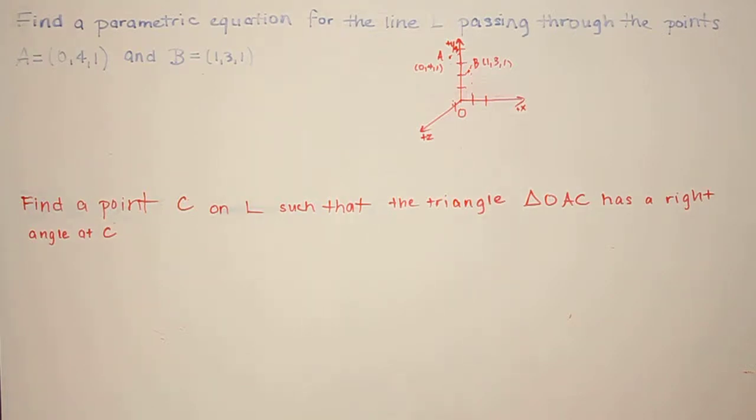Say we want to find a parametric equation for the line L passing through the points A = (0, 4, 1) and B = (1, 3, 1).